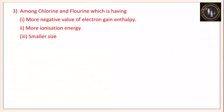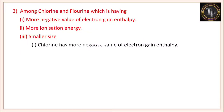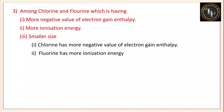Among chlorine and fluorine: which has more negative electron gain enthalpy, more ionization energy, and smaller size? Chlorine has more negative electron gain enthalpy because fluorine, being highly electronegative, has more electron-electron repulsion in its small orbitals. Fluorine has more ionization energy. Fluorine has a smaller size, due to the stronger nucleus-to-outermost-electron attraction.